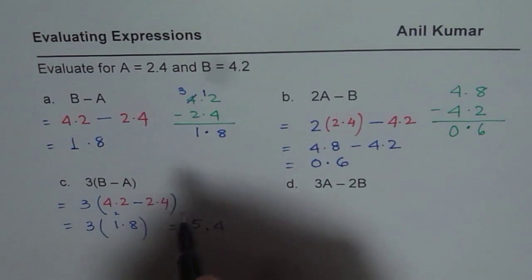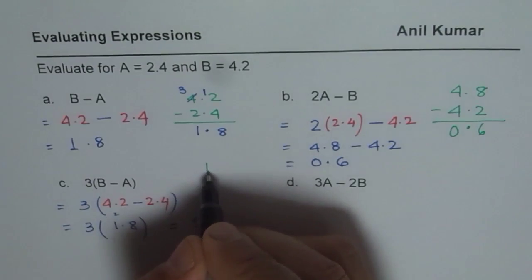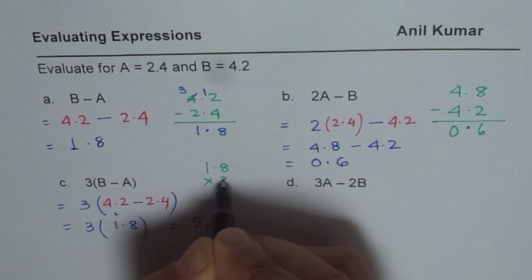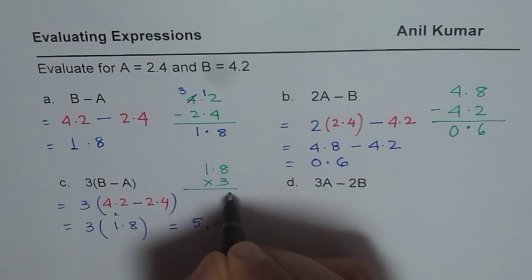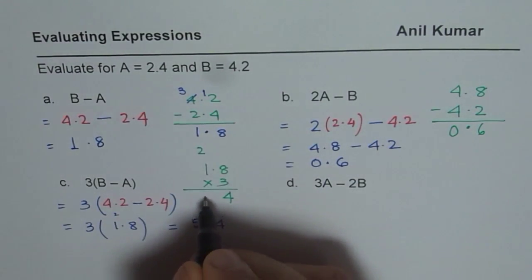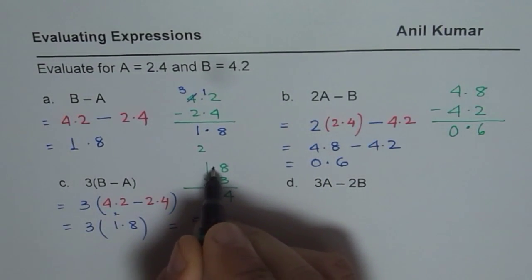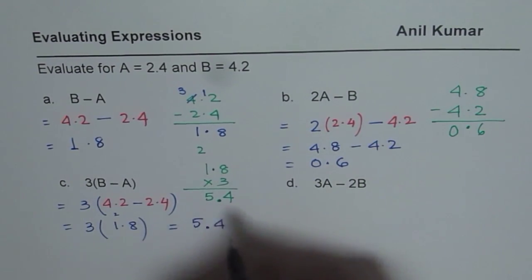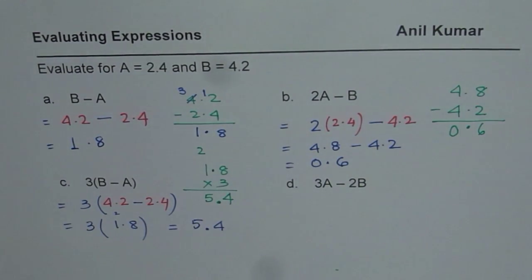Some of you can actually do it like this, which is 1.8 times 3. 3 times 8 is 24, 4 is 2. 3 times 1 is 3 plus 2 is 5. And since there is one number after decimal, we place the decimal right there.